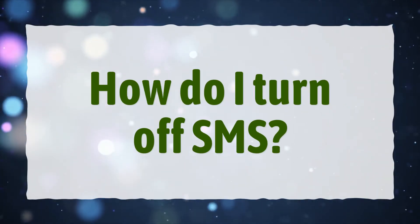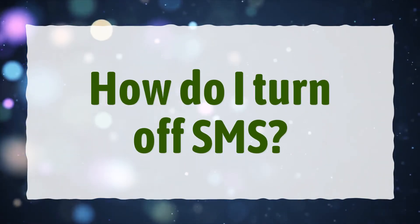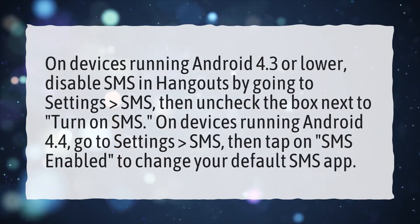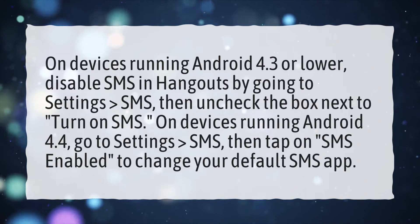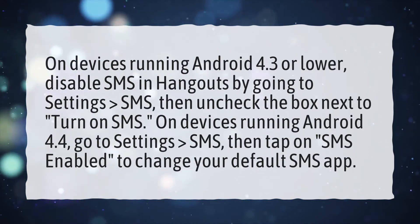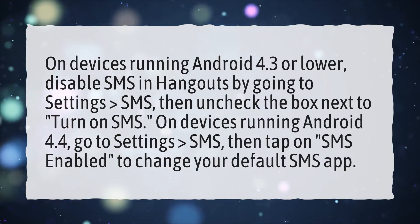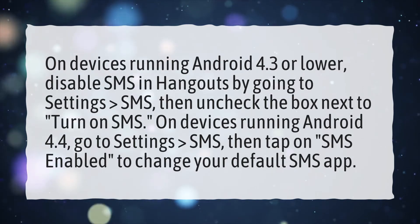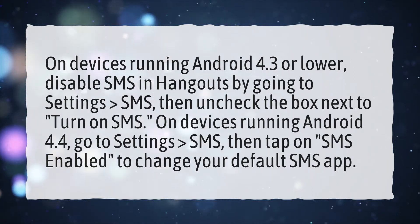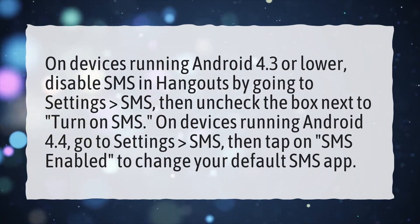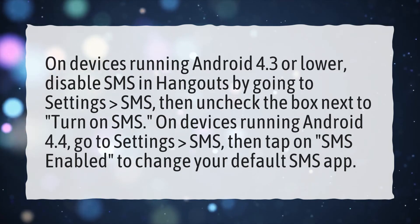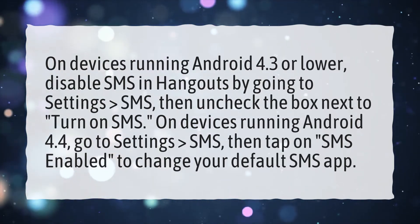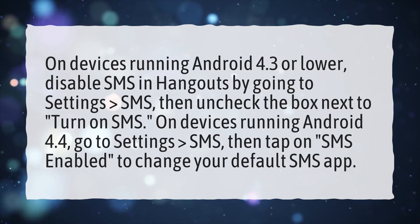How do I turn off SMS? On devices running Android 4.3 or lower, disable SMS in Hangouts by going to Settings, then SMS, and uncheck the box next to 'Turn on SMS.' On devices running Android 4.4, go to Settings, then SMS, and tap on 'SMS enabled' to change your default SMS app.